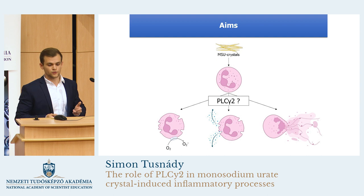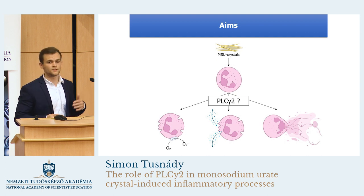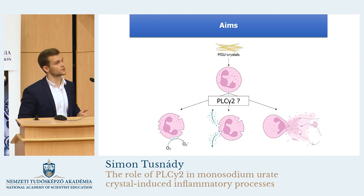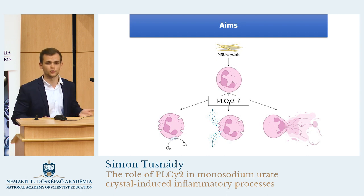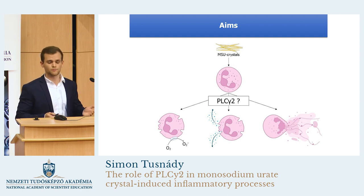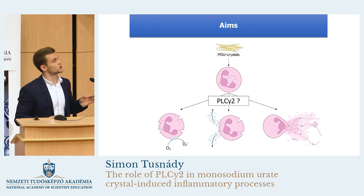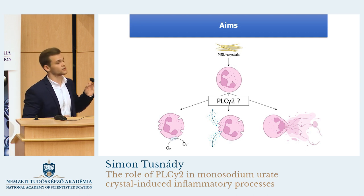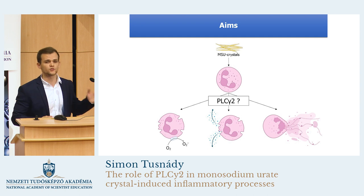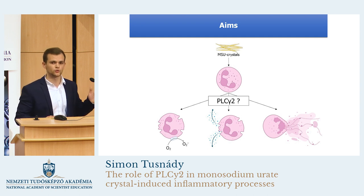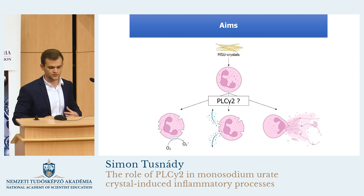But in monosodium urate crystal-induced activation, the signaling pathways which lead to the activation of the neutrophils are still unknown. Therefore, our main purpose was to examine whether this previously observed and crucial downstream role of PLC gamma 2 can also be found in the case of monosodium urate crystal-induced activation of the neutrophils.